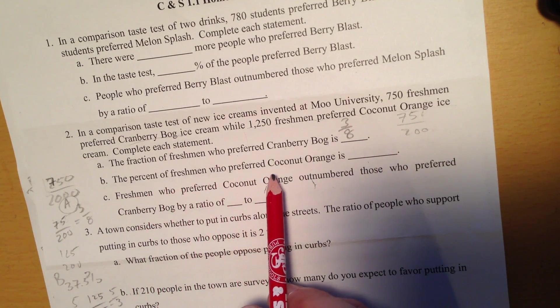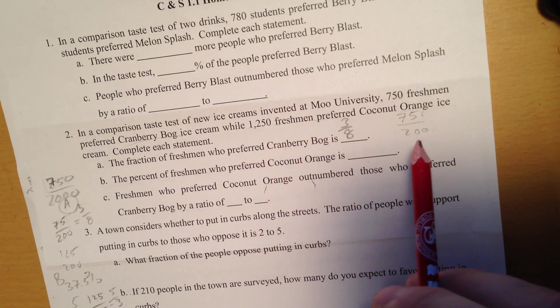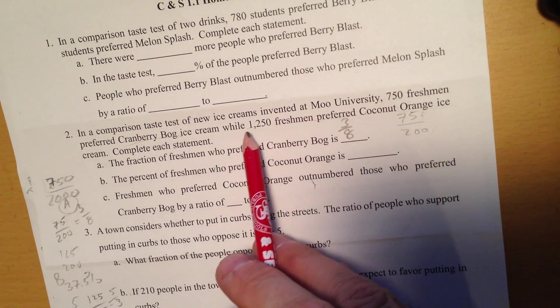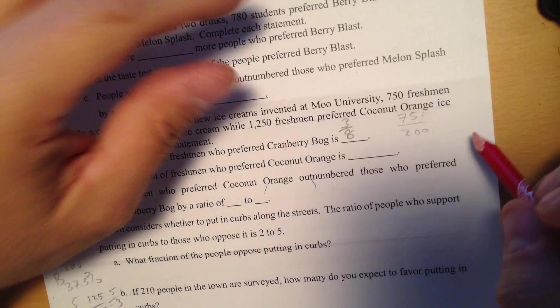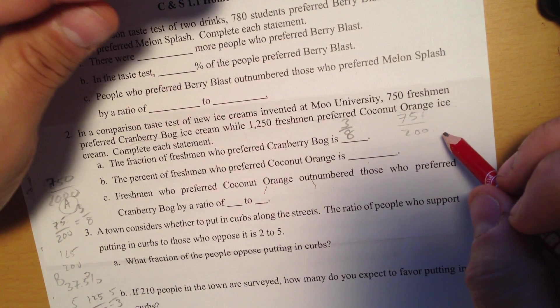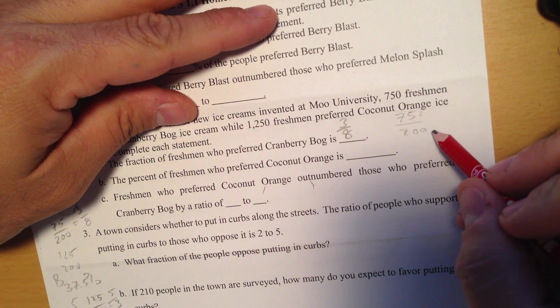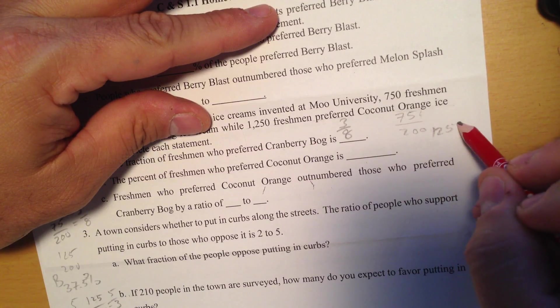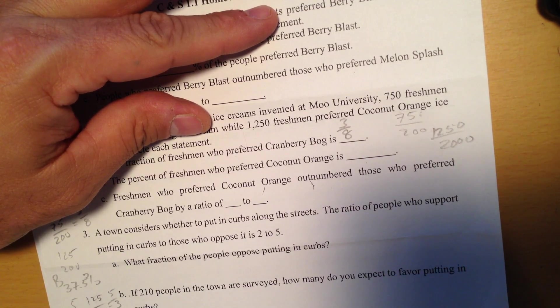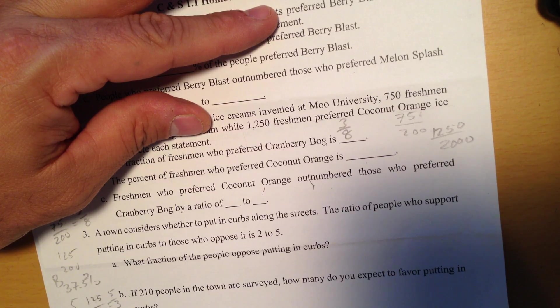What percentage of freshmen preferred coconut orange? So the percentage of freshmen that preferred coconut orange. So I am going to take 1,250 and divide that by 2,000, and I'm going to get 62 and a half.